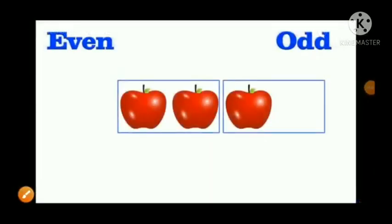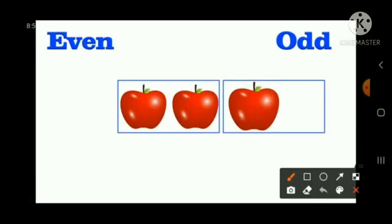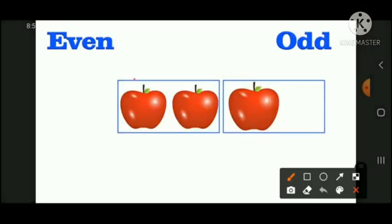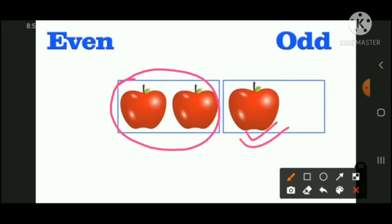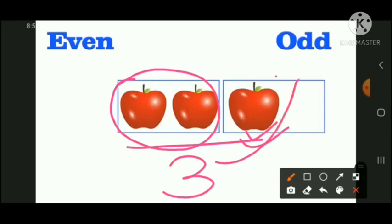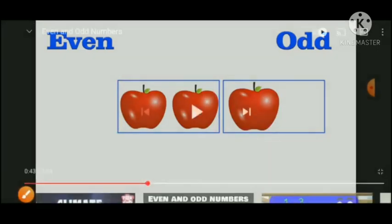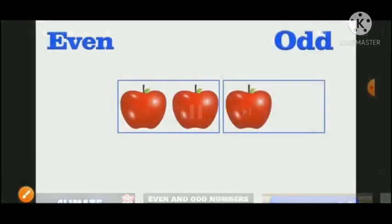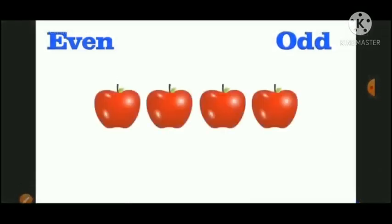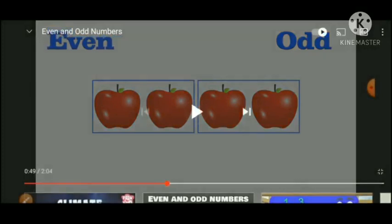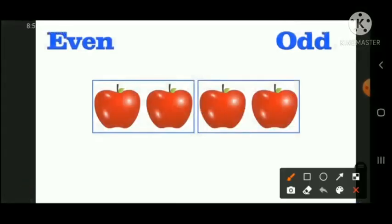Let's see an example to understand even and odd using apples. Three apples were there. When we make pairs, two apples go into a pair and one apple is left behind. Since one apple is left behind, three belongs to the odd group.